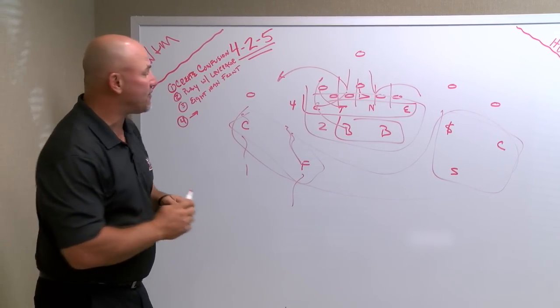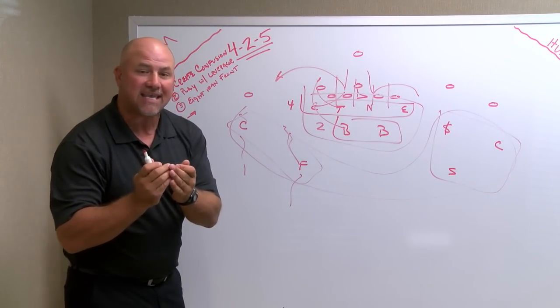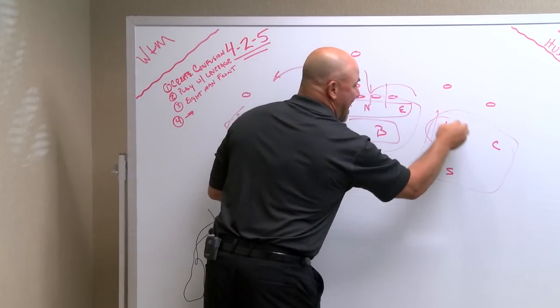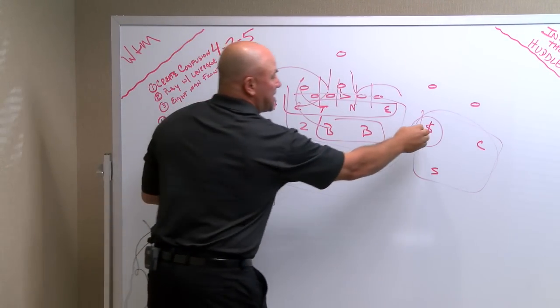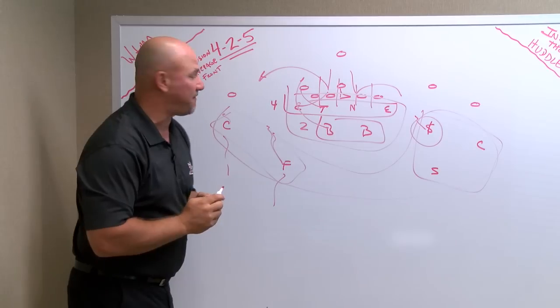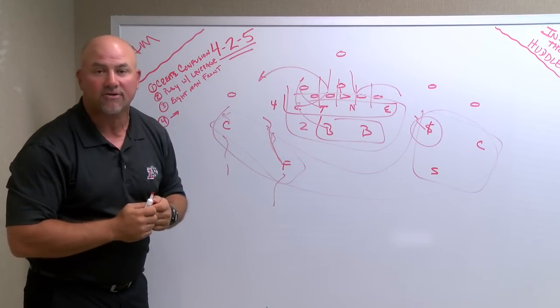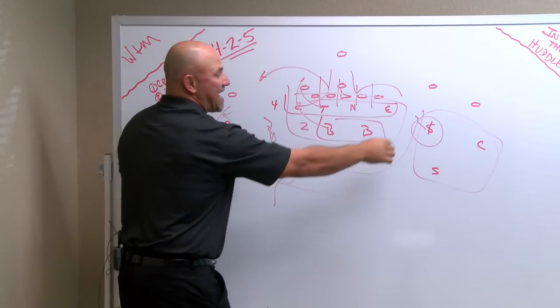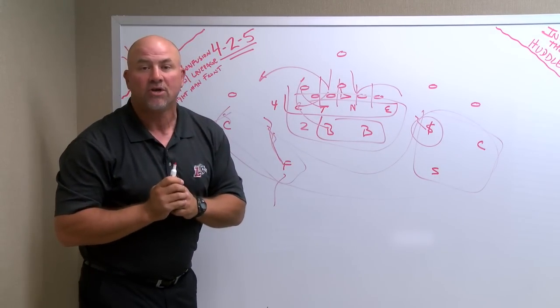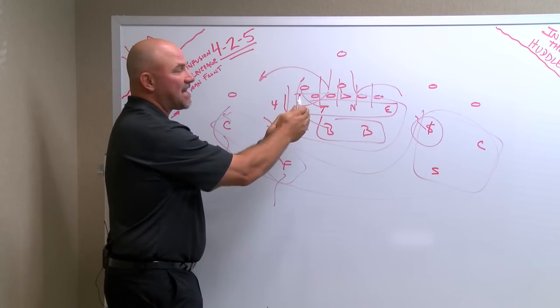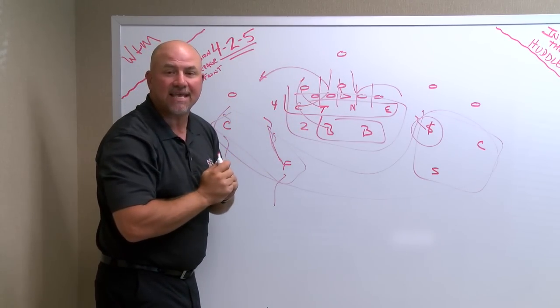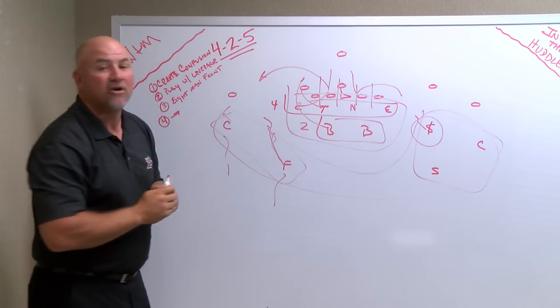And then the last thing is you really try to get that eight man front. This cat or this striker, whatever you want to call him, becomes that outside linebacker to the field. The free safety can come basically the outside linebacker to the weak side. So you create an eight man front very difficult to run against. So we constrict the inside lanes. We spill everything to the outside and we use a lot of speed on the outside.